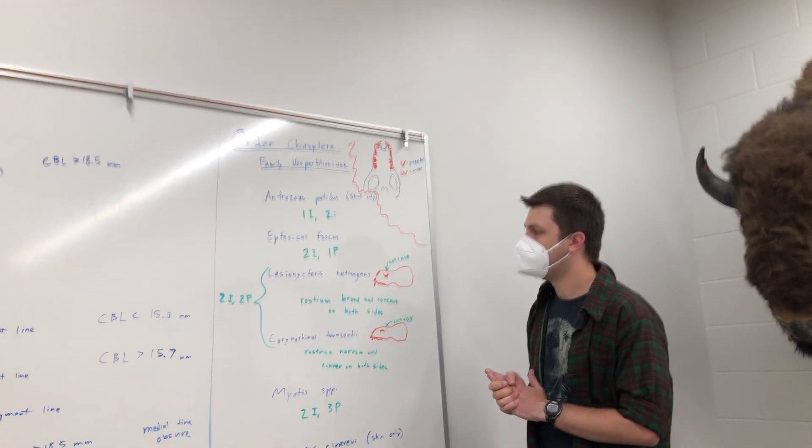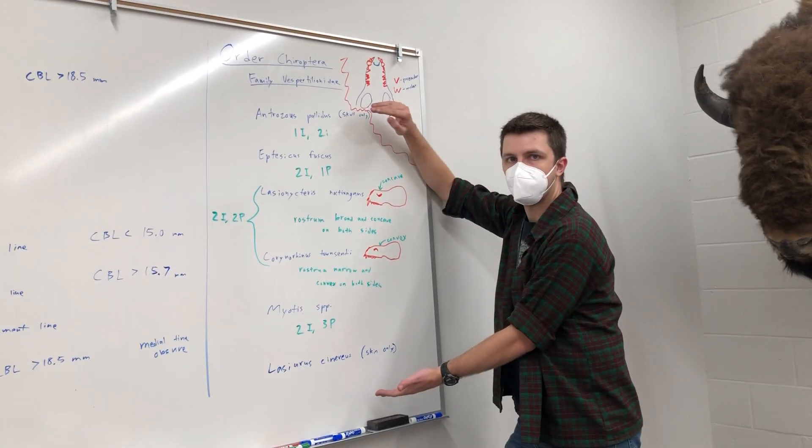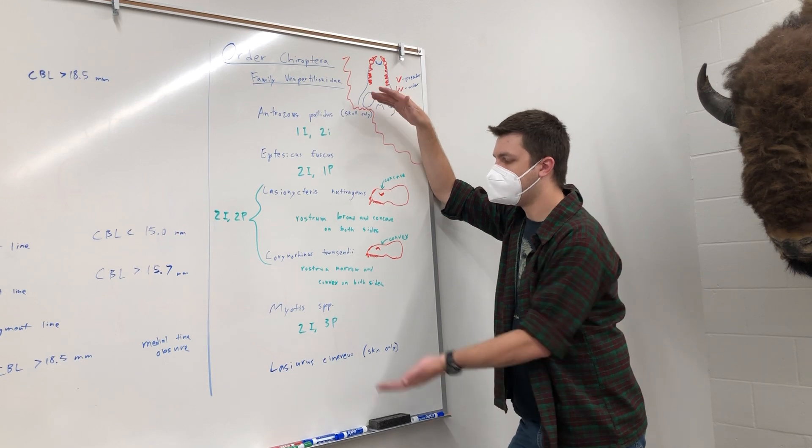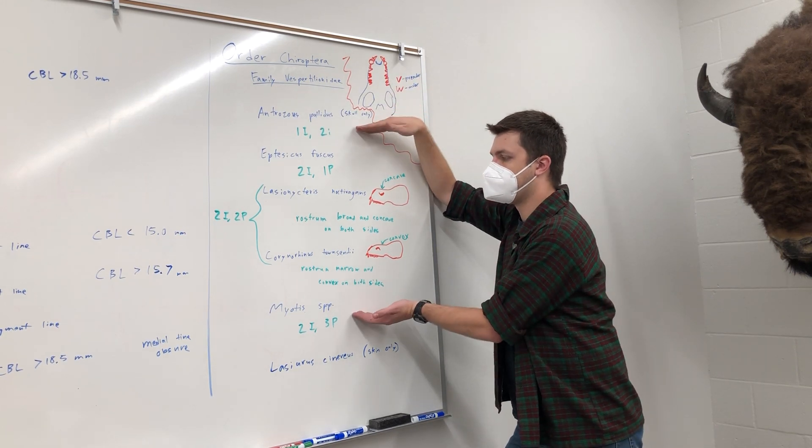So, looking at the bats then, we have six species that we're covering in this class, plus two more we're not, but we only are looking at the skulls for five of them.